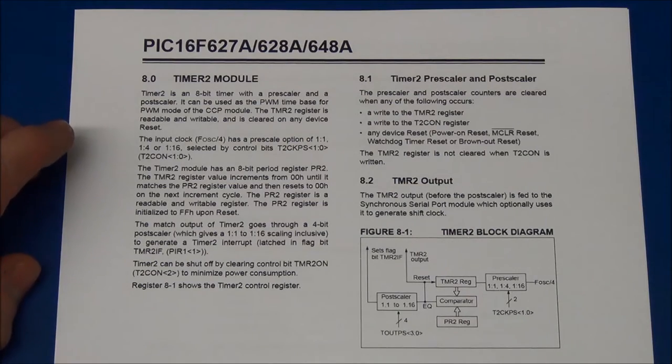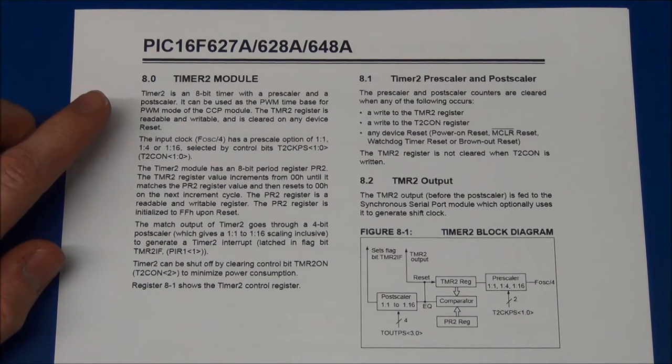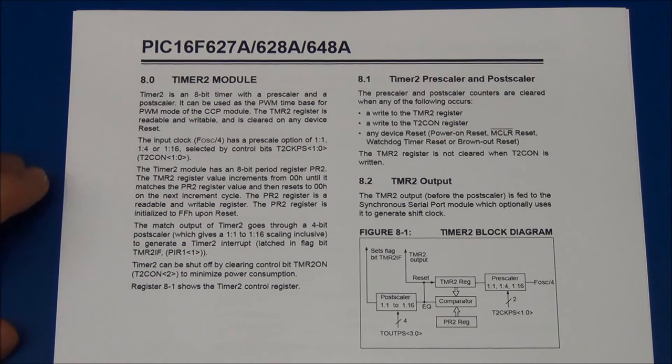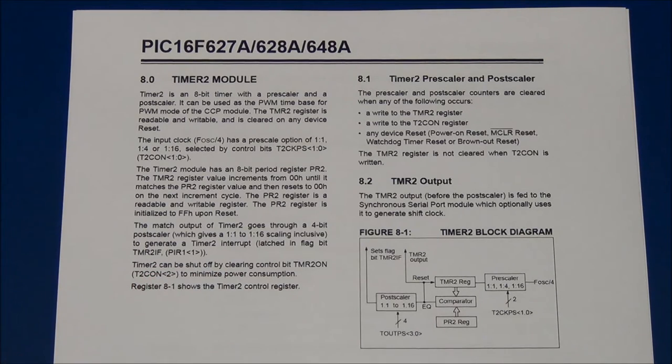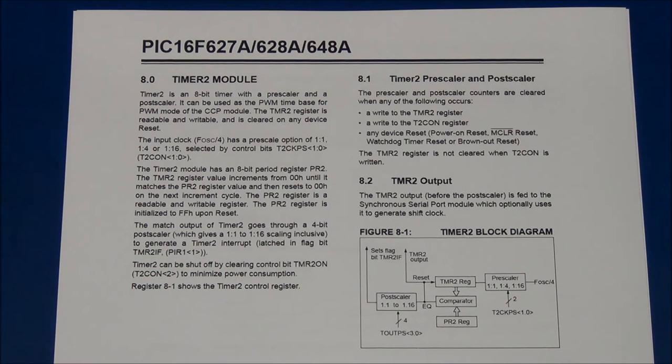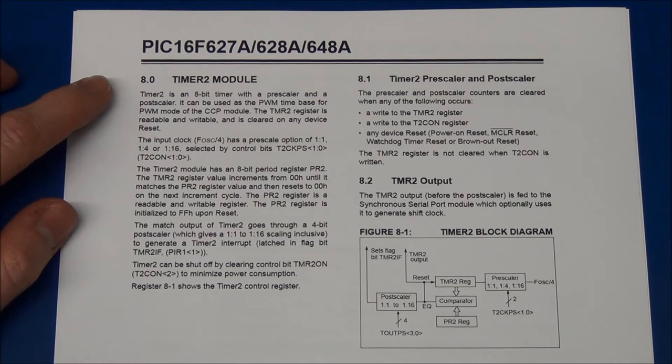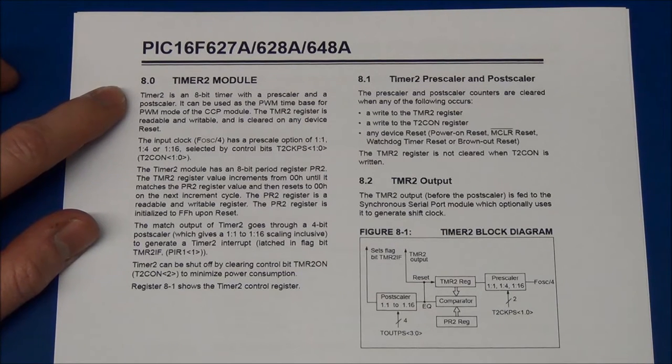So this microcontroller has three timers. But if you want to ditch the 32kHz crystal, then timer 2 is of interest. What is interesting about this timer is the post-scaler, but we will get back to that. By reading the data sheet we will find everything we need. It starts by saying timer 2 is an 8-bit timer with pre-scaler and a post-scaler.